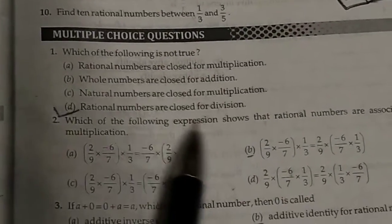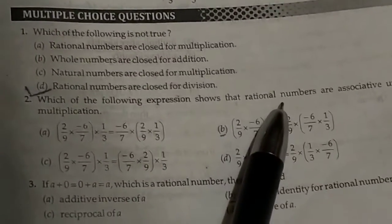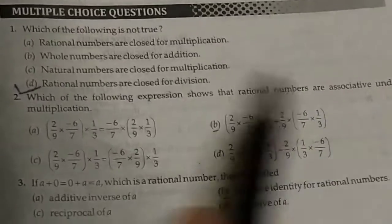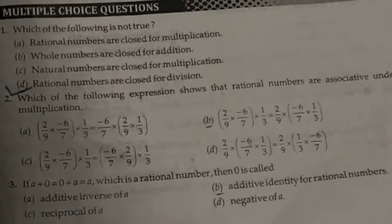Second one is which of the following shows that the rational numbers are associative under multiplication? Associative property.